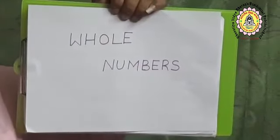Children, the natural numbers along with zero form a new set of numbers called whole numbers. The natural numbers along with zero are called whole numbers. Whole numbers are denoted by the letter W. In whole numbers, zero is the smallest whole number. In natural numbers, the smallest natural number is 1. In these two sets, you cannot say what the largest number is.